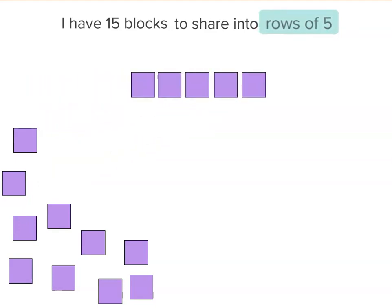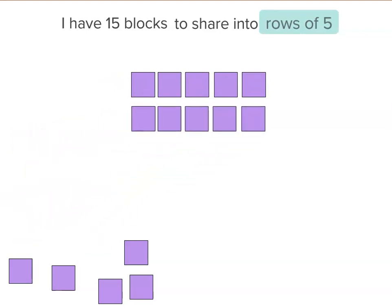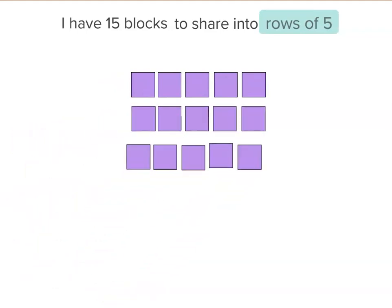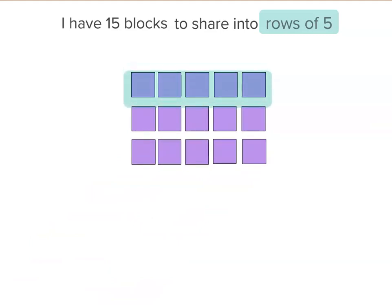15 blocks shared into rows of five. I have one row of five, another row of five, and another row of five. So that means I've got one, two, three rows of five altogether. So 15 divided by five or shared into rows of five equals three.